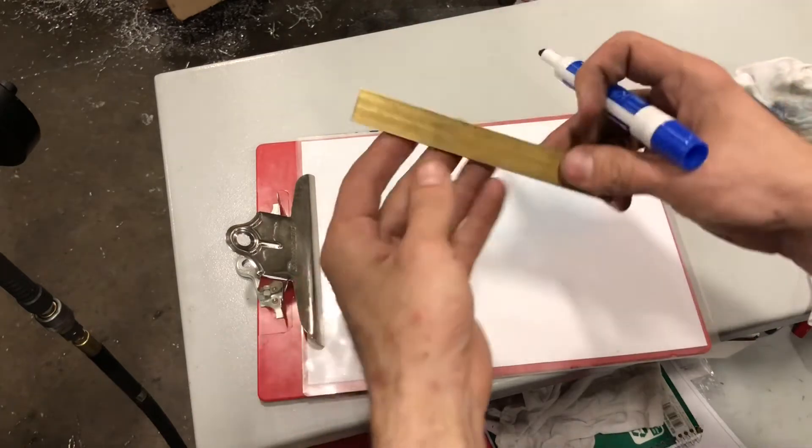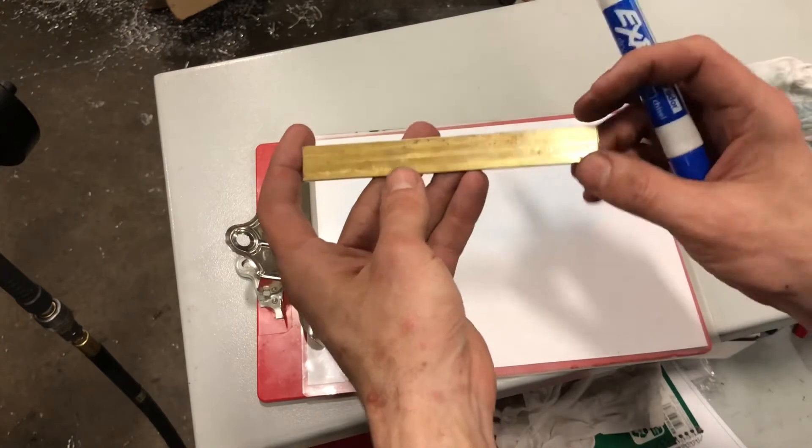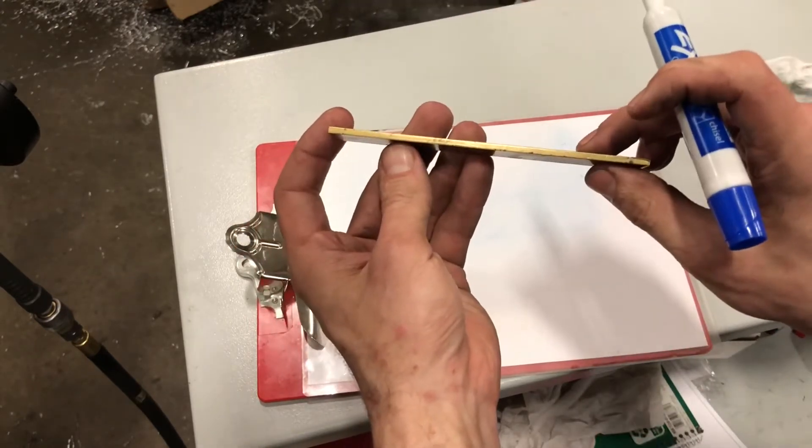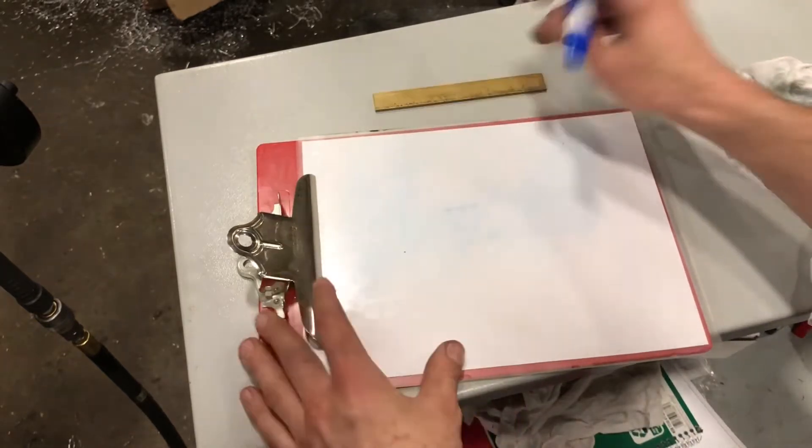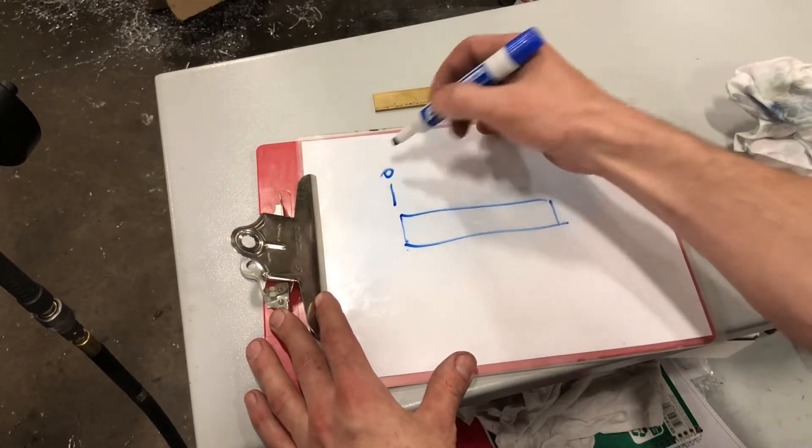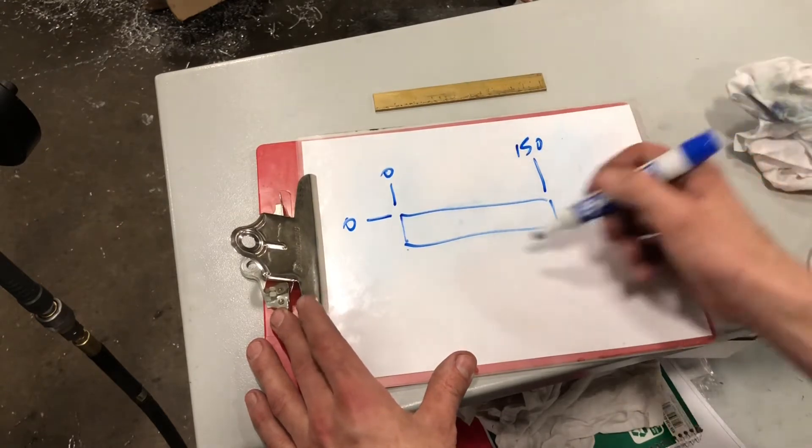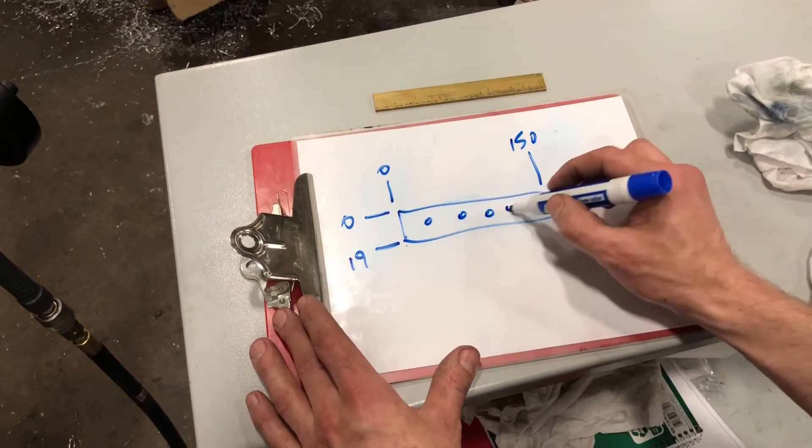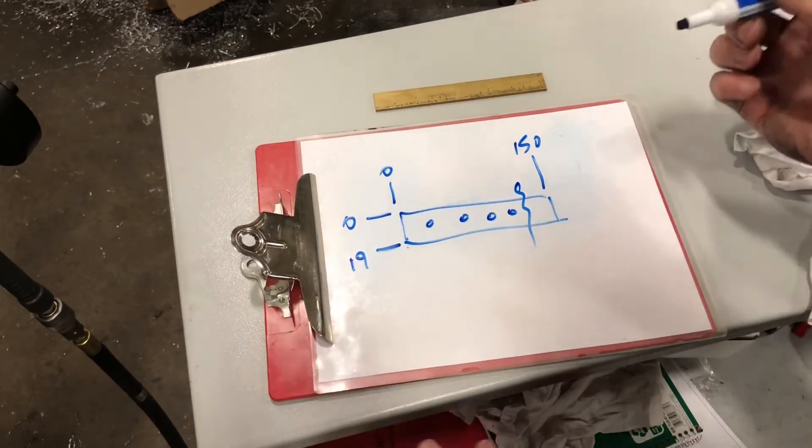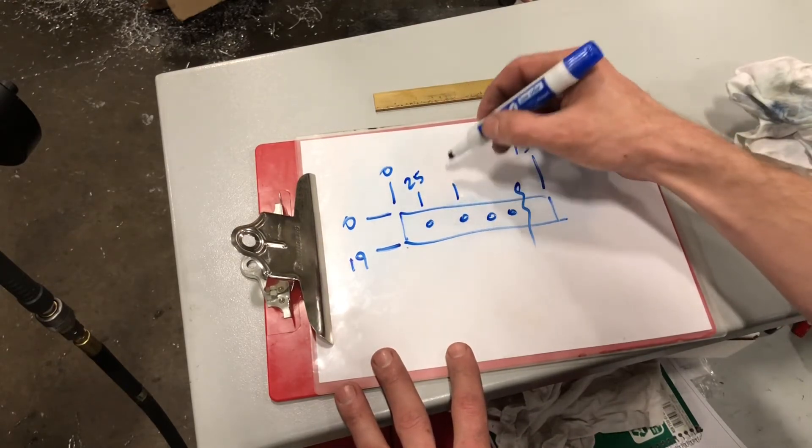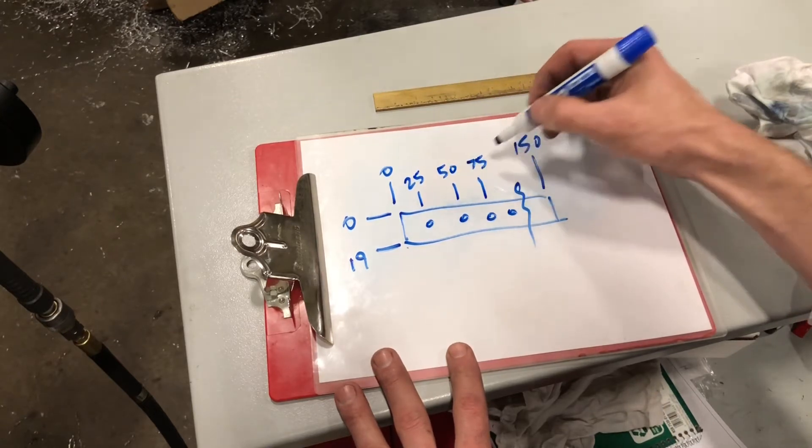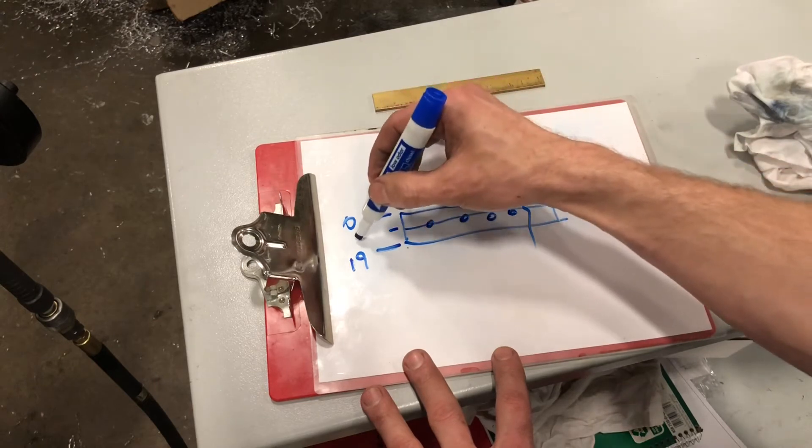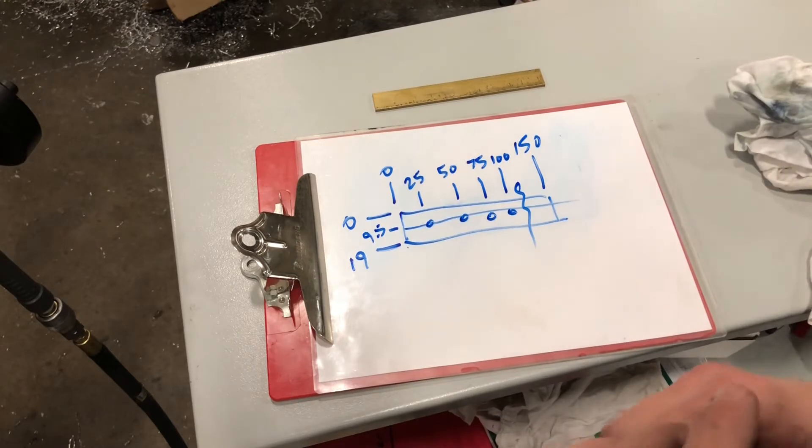So next thing I'm going to show you is basic drilling program on a Bridgeport with ProtoTrak. The material that I'm using for the demonstration is 19 by 150, 3.2 millimeter thick brass. Here's X0, Y0 - say this is our blueprint. 150, we have 19. Say we have holes every 25 millimeters. Obviously we're not drawing to scale. Say we have 25, 50, 75, 100. They're in the middle as far as our Y, so that's going to be 9.5 in the middle, and let's bring it to the screen.